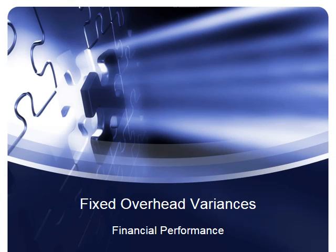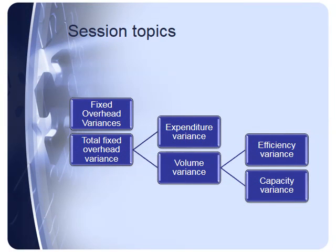In this session we're going to look at fixed overhead variances. We'll look at the various different types of variances that we can calculate. These are expenditure and volume variances, and sometimes we'll also be able to calculate efficiency and capacity variances. But that depends on the costing system that's being used.